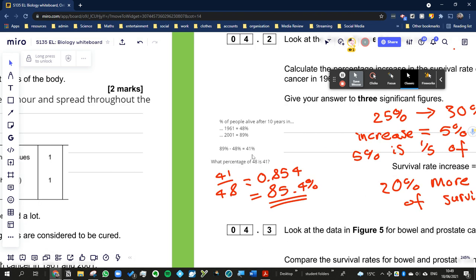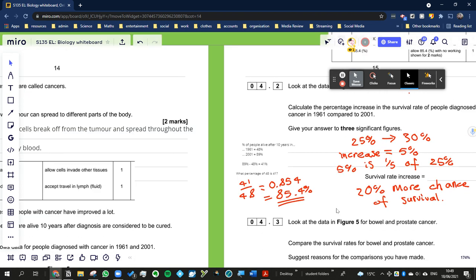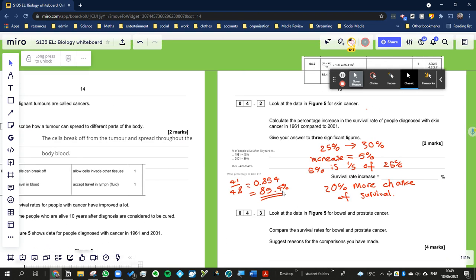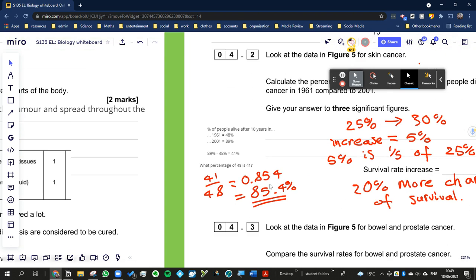If you end up writing just 41% you'll probably get one mark, and so you'll end up losing that second mark by not realizing to divide it by the original 48.